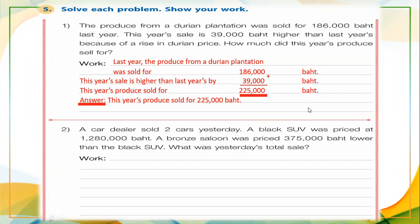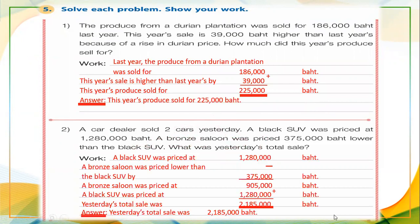Now the next problem: a car dealer sold two cars yesterday. A black SUV was priced at one million two hundred eighty thousand baht. A bronze saloon was priced three hundred seventy-five thousand baht lower than the black SUV. What was yesterday's total sale?